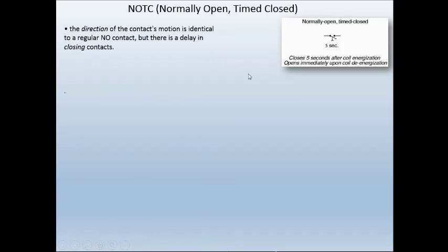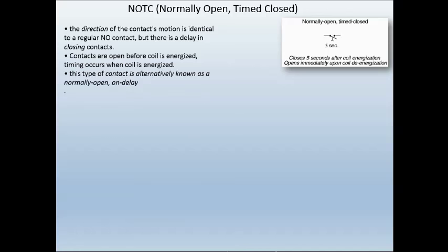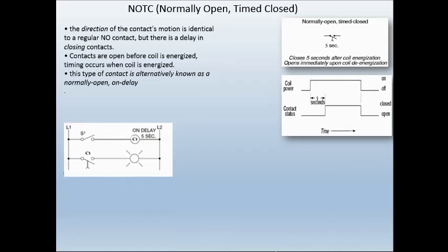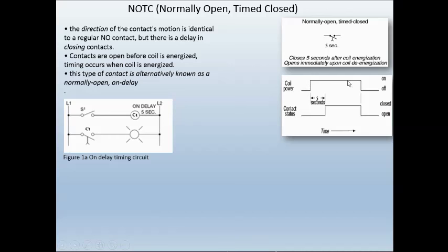Let's talk about a normally open timed closed. This is the symbol for a normally open timed closed. The contact is shown in open position. The direction of the contact's motion is identical to a regular normally open contact, but there is a delay in the closing of the contact. When we look at this picture, we see it come down like this and there's an arrow pointing up — that is the direction of the delay. So it means that after five seconds, it's going to close. The contact will move up.